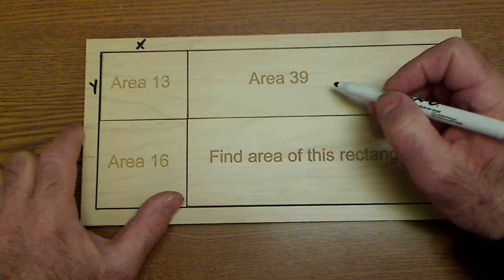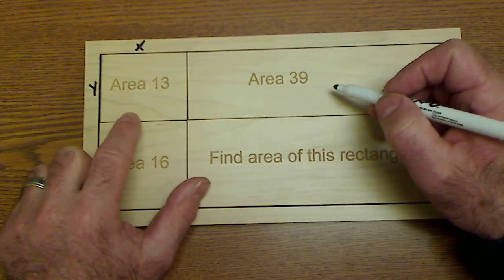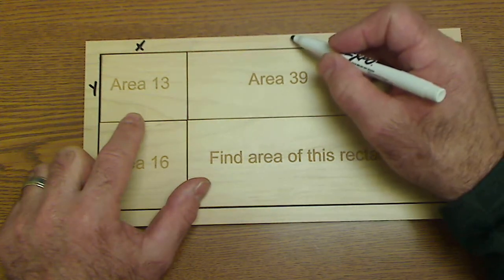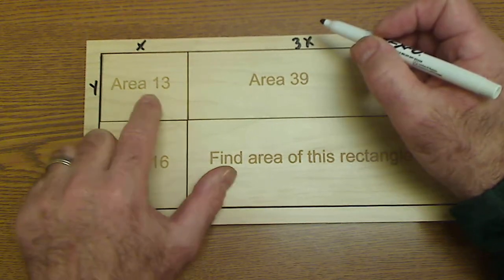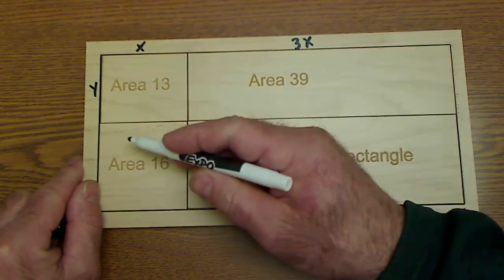The area of this is three times as large as this rectangle, but the height y is the same, so the base has to be three times longer. If that's x, this has to be 3x to give me the 39 because the y's are constant.